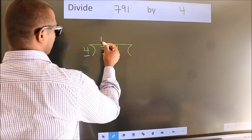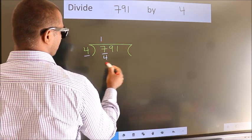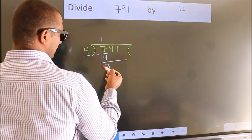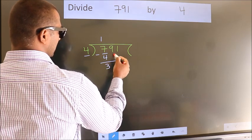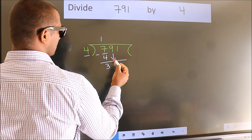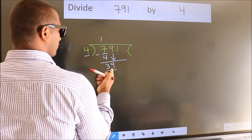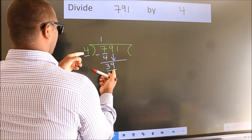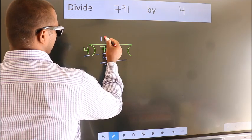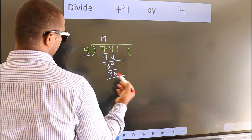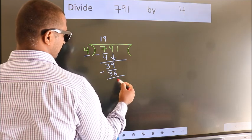Now we should subtract. We get 3. After this, bring down the beside number, so 9 down. So 39. A number close to 39 in the 4 table is 4 nines, 36. Now we subtract. We get 3.